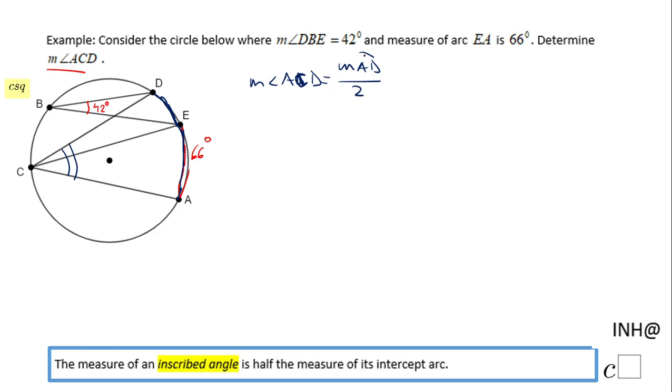As you notice, we need first to find the measure of arc AD. For that reason, we're going to look here in the picture. The measure of arc AD will be equal to the sum of the measure of arc DE, which is this one, and the measure of arc EA. We know the measure of arc EA is given to us—it's 66—however, we need to find the measure of arc DE.